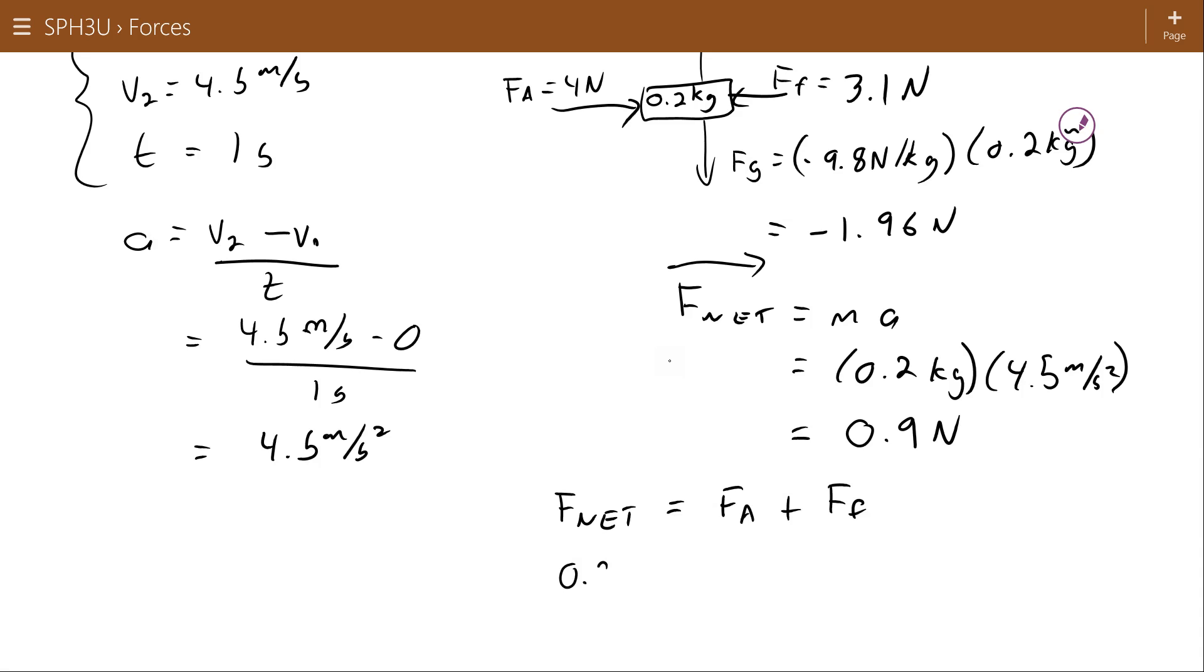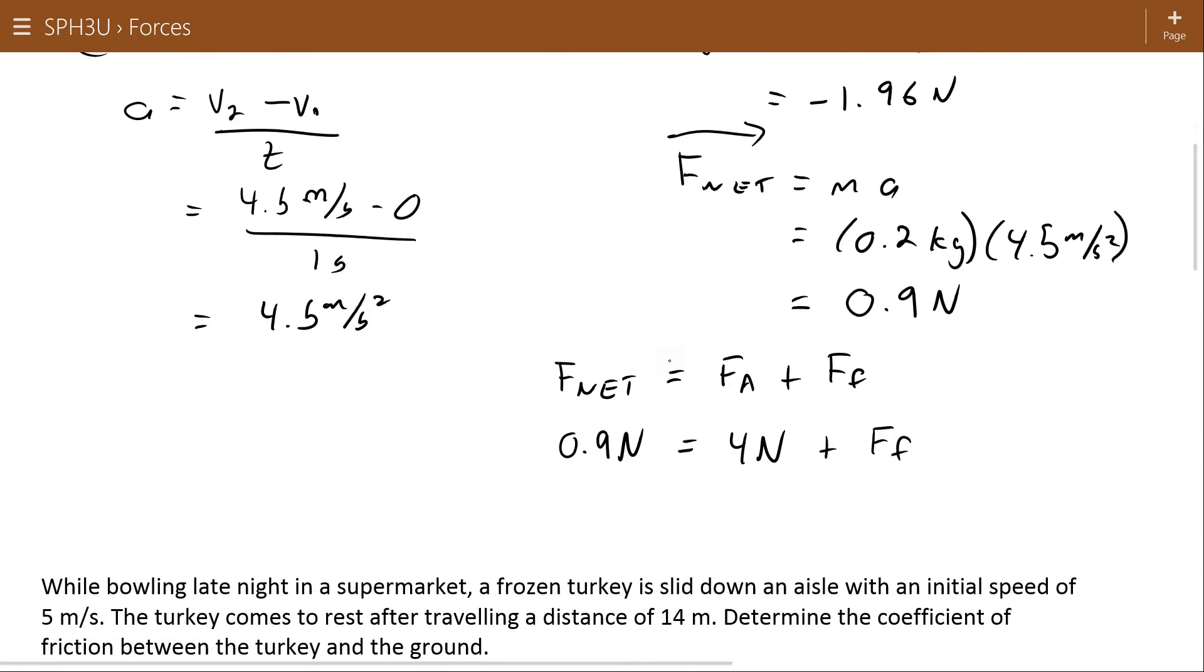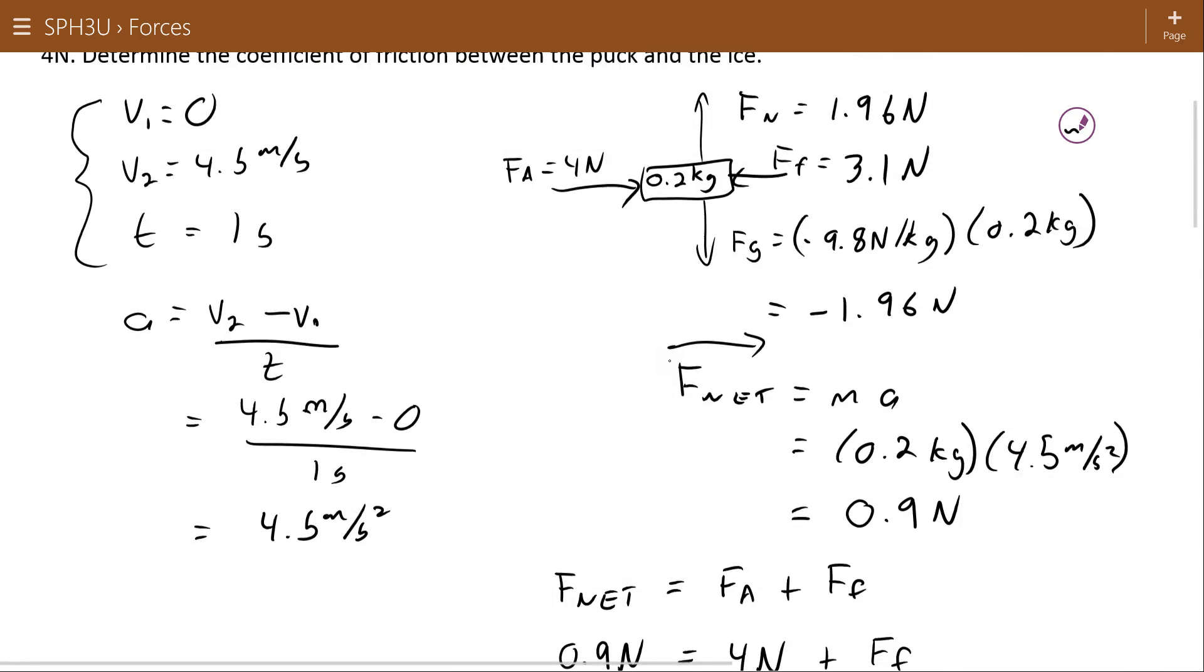So 0.9 newtons is equal to 4 newtons plus force of friction. And then when that 4 newtons comes over, the force of friction is going to be equal to negative 3.1 newtons. So that's actually negative.